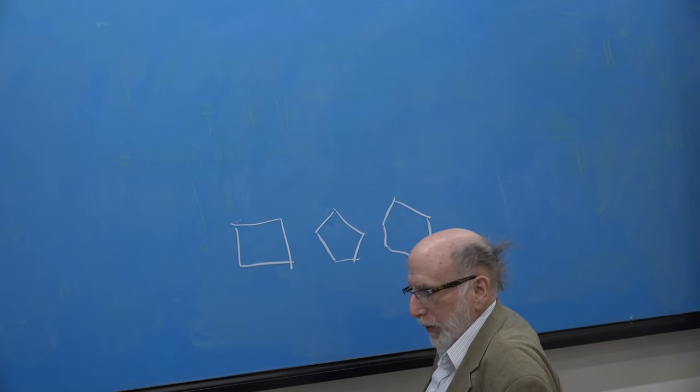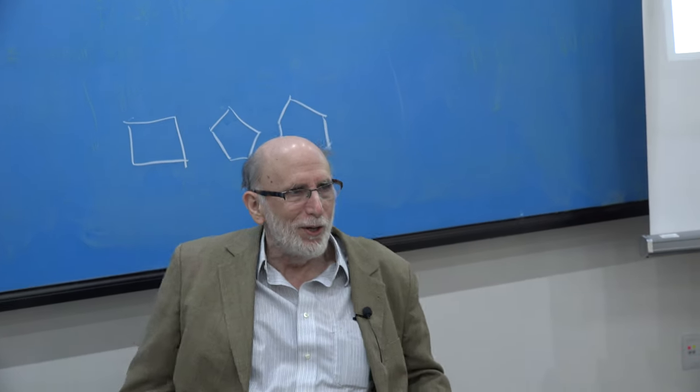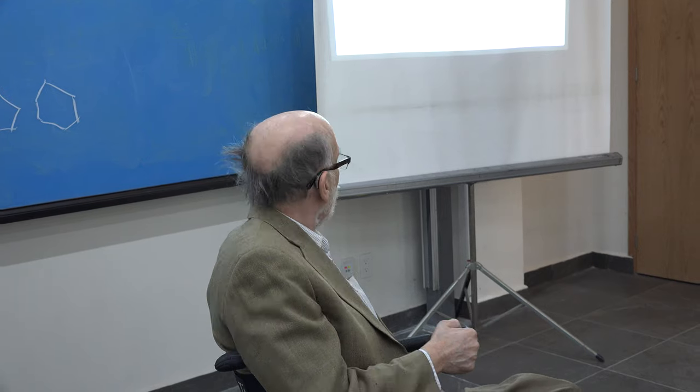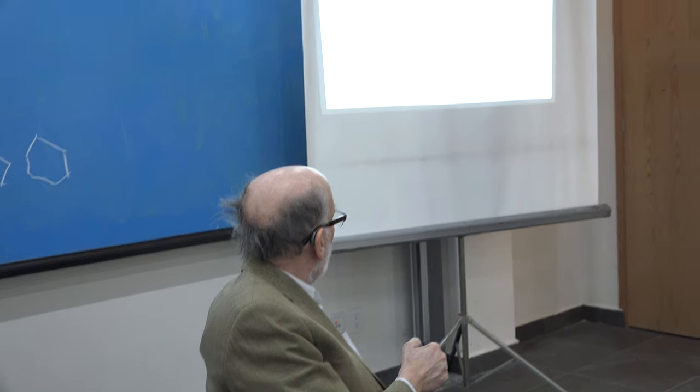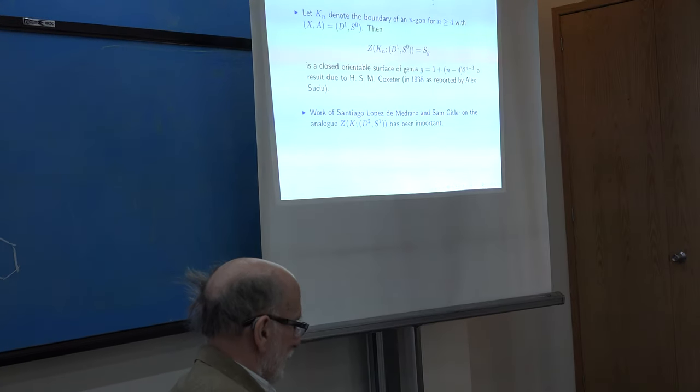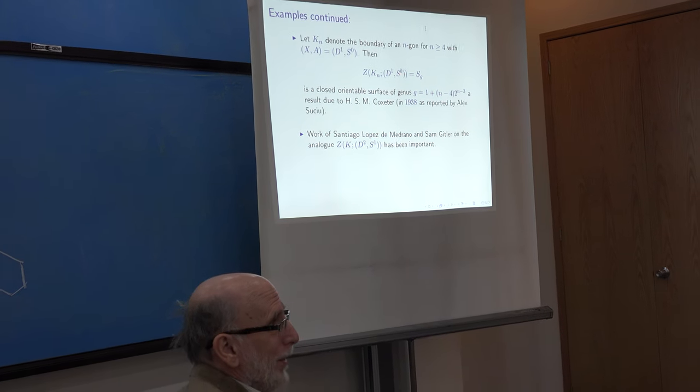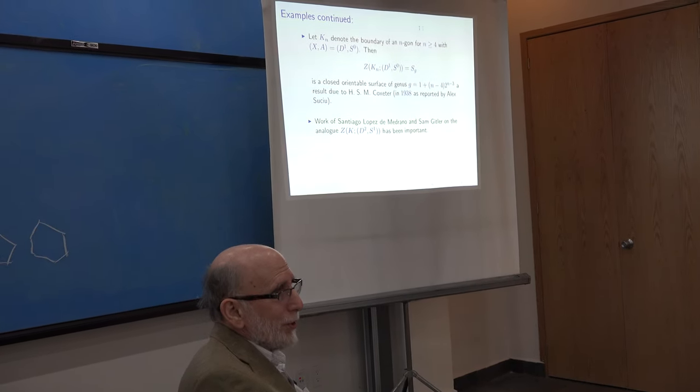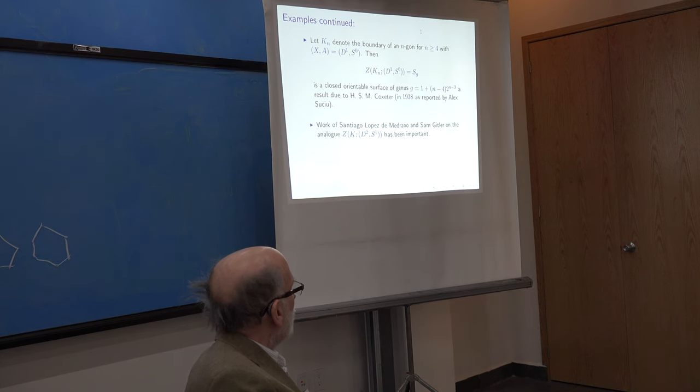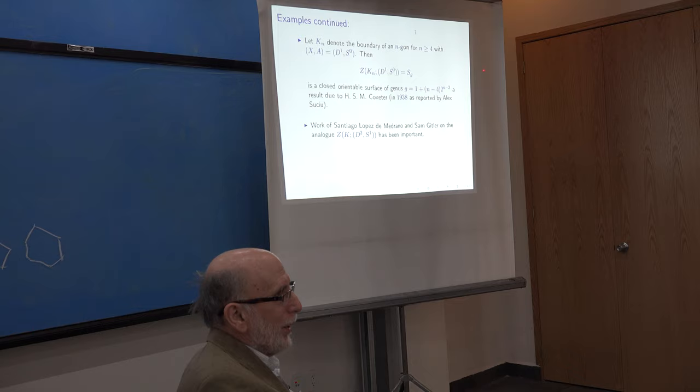So, there are various cases of N-gons. There's a 4-gon, a 5-gon, and a 6-gon. So, what we're going to do is look at those simplicial complexes, just the boundary of the N-gon, and a theorem that dates back to Coxeter in 1938 is that the space ZKN is a Riemann surface of genus G where the genus is 1 plus N minus 4 times 2 to the N minus 3.